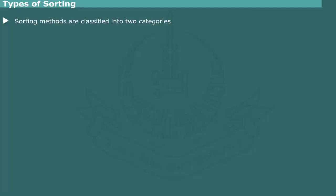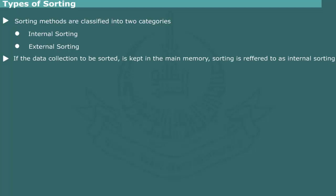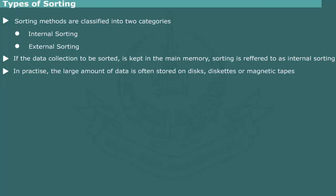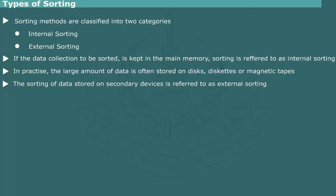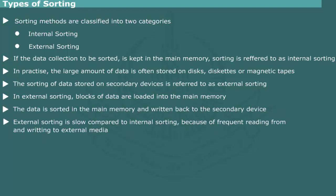Types of Sorting: Sorting algorithms are classified into two categories — internal sorting and external sorting. When sorting is done on a data collection which is kept entirely in main memory, it is referred to as internal sorting. In most real-life applications, however, all data to be sorted cannot be accommodated in RAM and is instead stored on secondary devices such as disk, diskette, or magnetic tape. In this case, blocks of data are loaded into main memory, processed, and merged with data on the devices. This mode of sorting is referred to as external sorting.